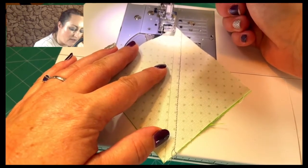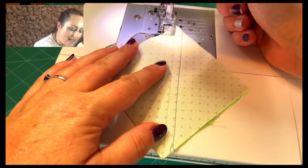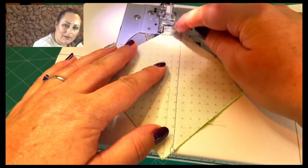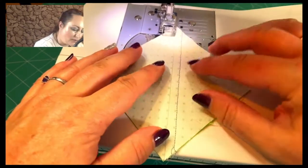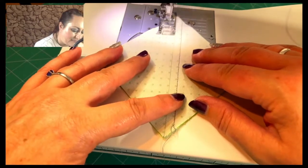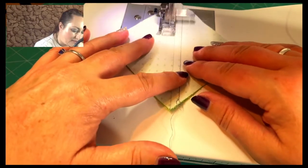So turn it around and get that pencil line against the edge of your foot. Start sewing just slightly off the fabric so you do catch either end. I'm going to sew down there.